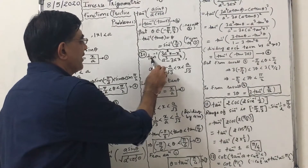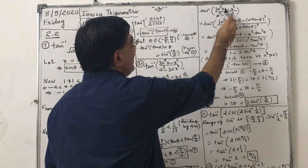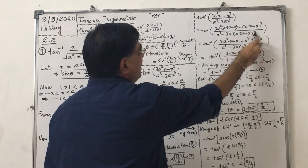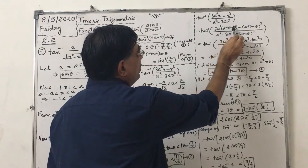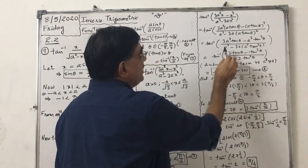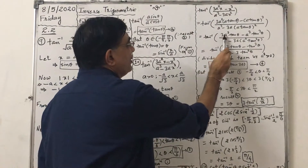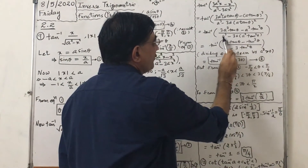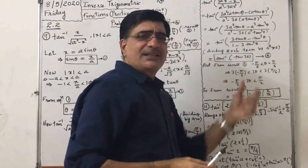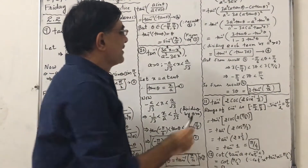tan⁻¹((3a²x − x³) / (a³ − 3ax²)). Putting x = a tan θ: we get a³(3 tan θ − tan³θ) upon a³(1 − 3 tan²θ). Taking a³ common and dividing (a is positive), it becomes tan⁻¹((3 tan θ − tan³θ) / (1 − 3 tan²θ)), which is the formula for tan 3θ. So I can write tan⁻¹(tan 3θ).